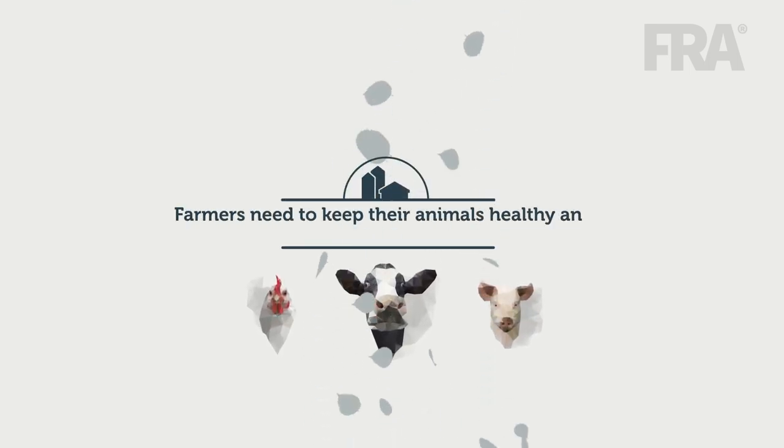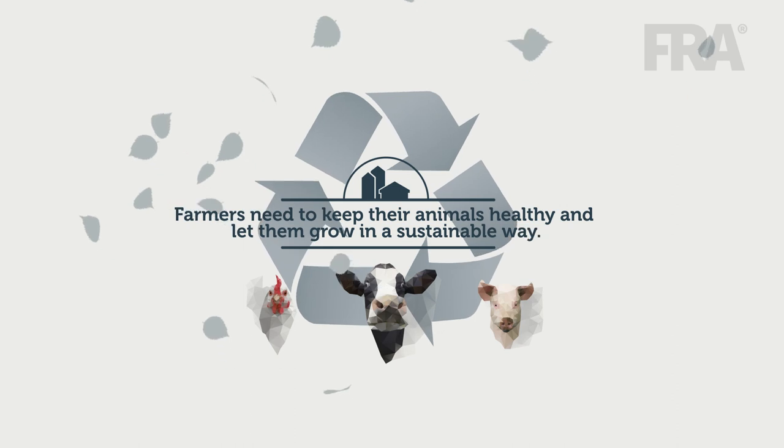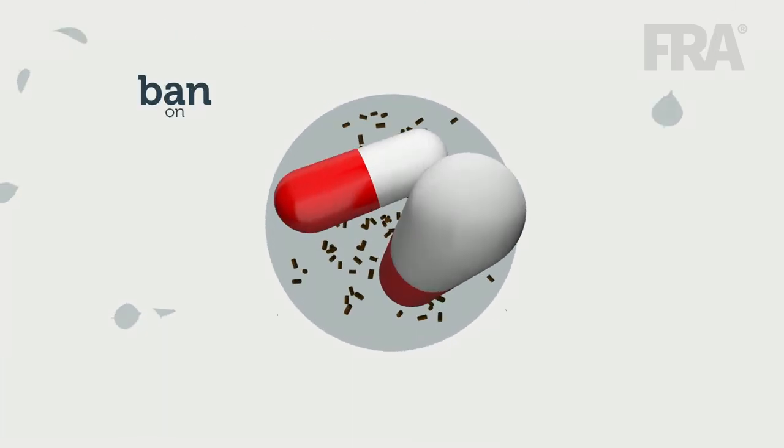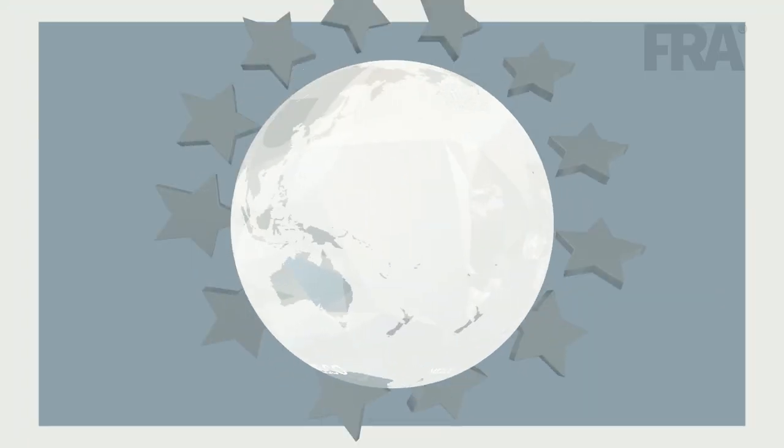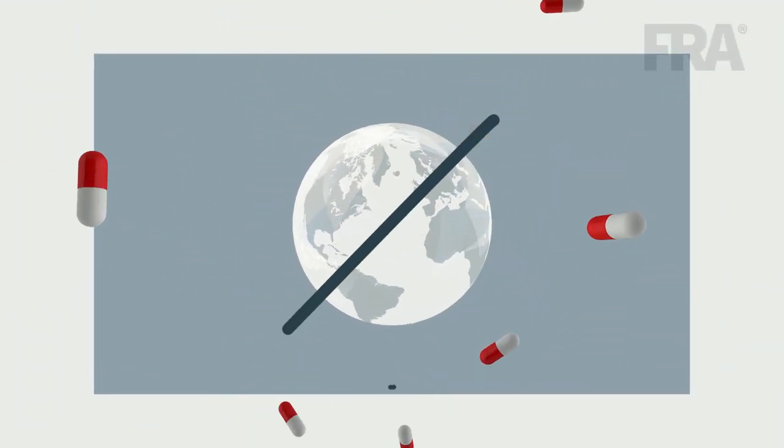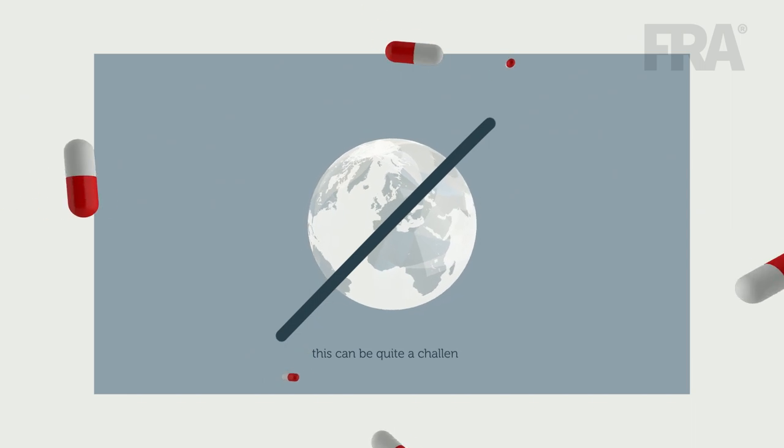Farmers need to keep their animals healthy and let them grow in a sustainable way. Since the ban on antibiotic growth promoters in animal feed in the European Union and the worldwide awareness of antibiotic resistance, this can be quite a challenge.